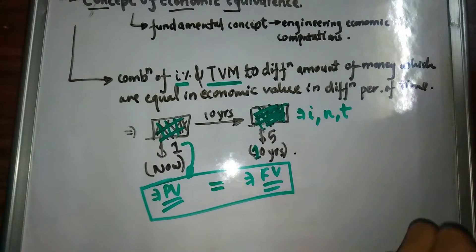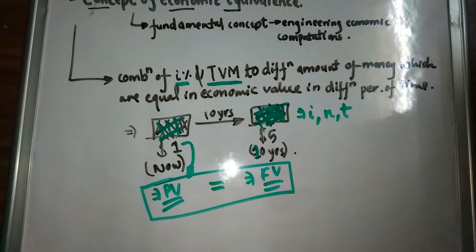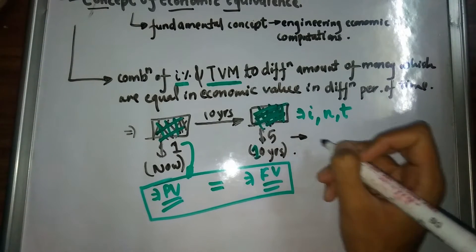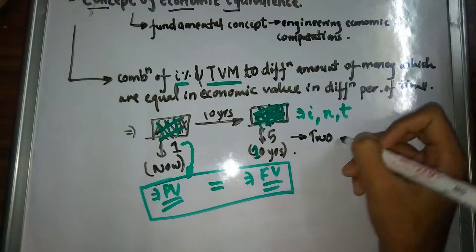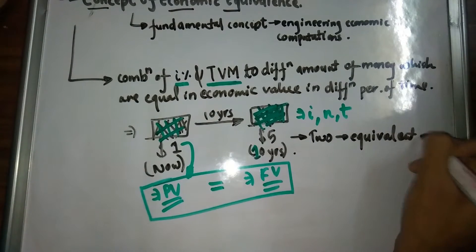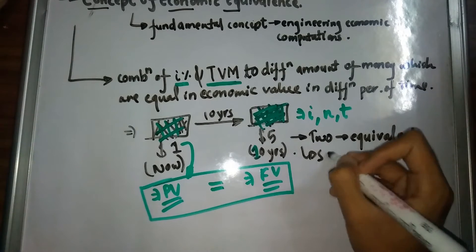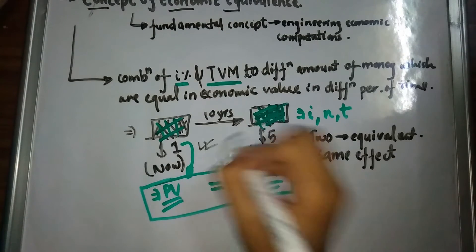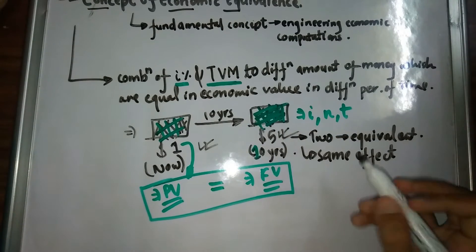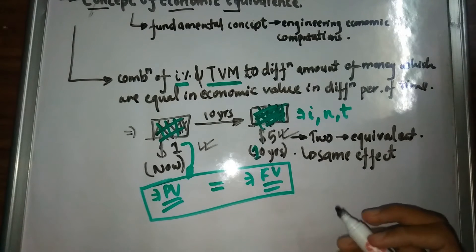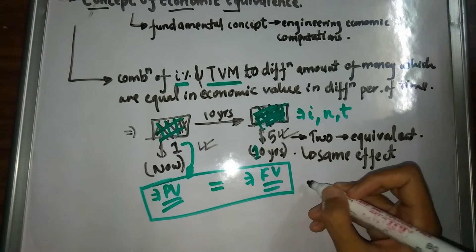This economic equivalency depends upon our interest rate and time value of money. Time value of money depends on interest rate, number of compounding years, and time period. So economic equivalence essentially means our present value and future value being equal in economic terms. Two things are said to be equivalent when they produce the same effect — both one dollar and five dollars have the same effect of buying the same packet of biscuit.